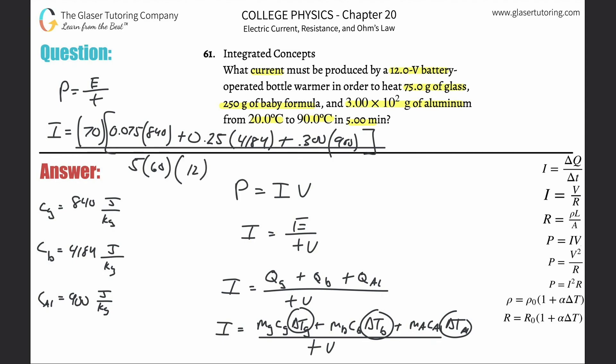If you got all that, we're good to go. Let's do the numerator. I'm going to do all in the brackets first: 0.075 multiplied by 840.